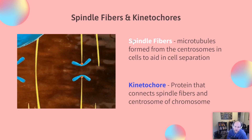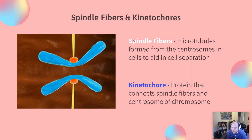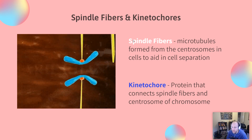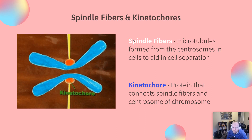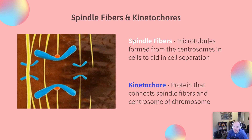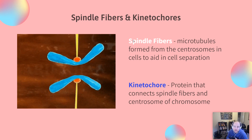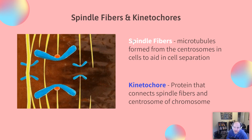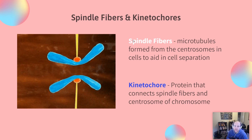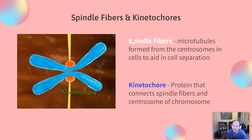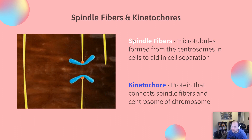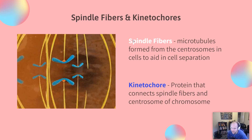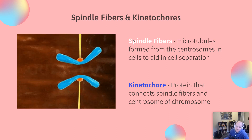In mitosis, we're going to be really interested in watching something called spindle fibers. Spindle fibers are going to attach to our chromosomes to actually pull them apart to make sure that we get an identical amount of DNA in each cell. It's really important that this process is very organized so that you end up with two cells that are identical. These spindle fibers are made up of microtubules from our cytoskeleton. They're formed in little organelles called centrosomes. Attached to the centromere of our chromosome — that little pin that holds the two sister chromatids together — is a protein called a kinetochore, which is what's going to actually attach to those microtubules.